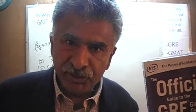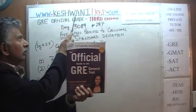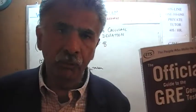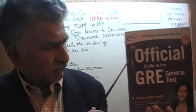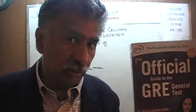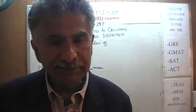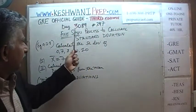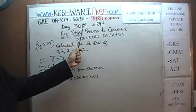Hello, my name is Keshwani — K-E-S-H-W-A-N-I. We are here because we want to prepare for the GRE. We have been solving math problems out of this book, the official guide to the GRE, the 3rd edition. If you do not own this book already, purchase it immediately — you are going to need it. Today is our lesson number 89, day 3089. The 3 signifies we are in the 3rd edition, day 89.